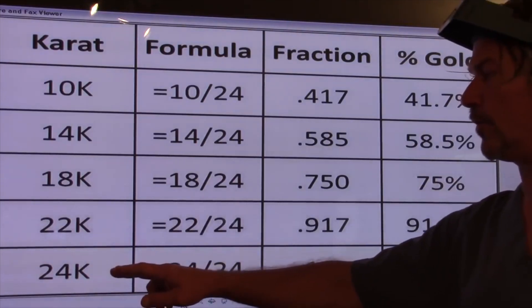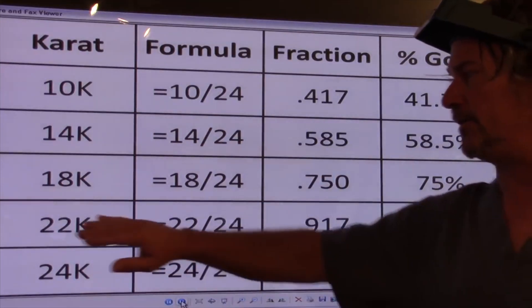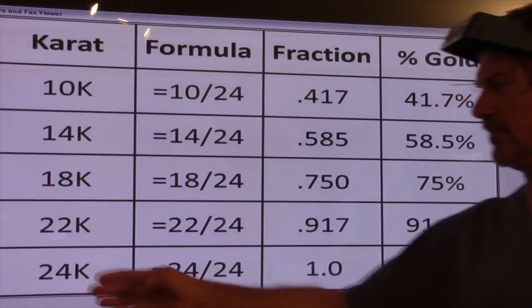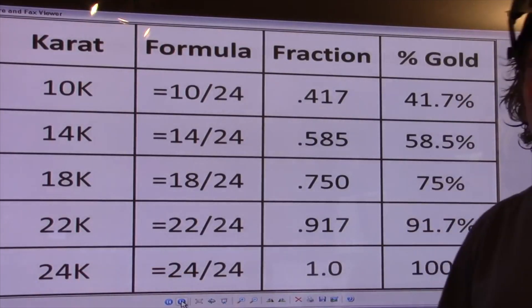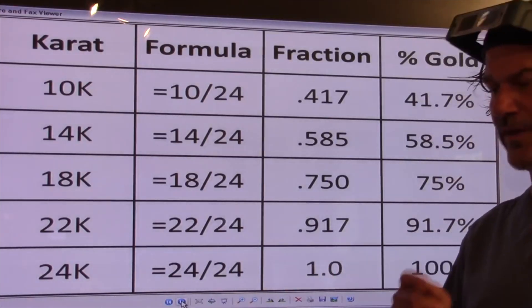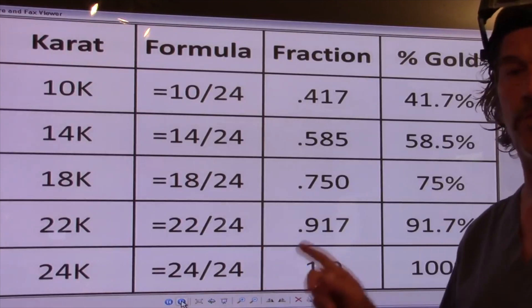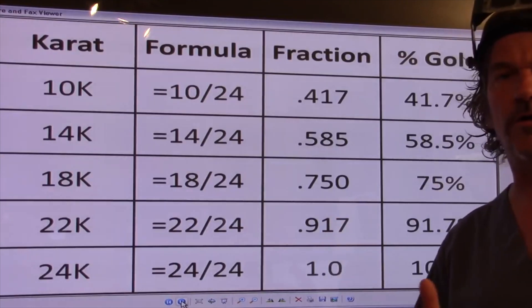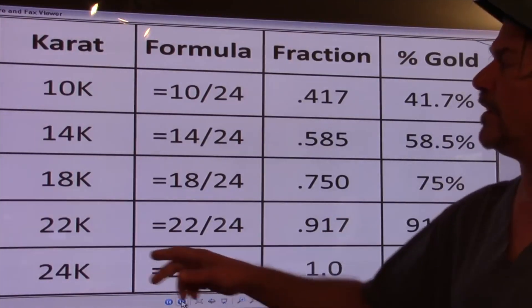It's stamped 10, 14, 18. You don't see 22 or 24 unless it's a gold bar or a coin, and it doesn't say 24 karat. It would say 0.999 because it's a 24 karat. It is just a theory. Pure gold doesn't exist except in the element form, and this is as close as you can get, 0.999.